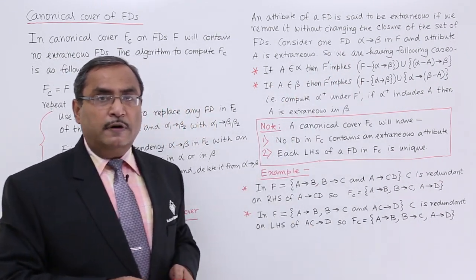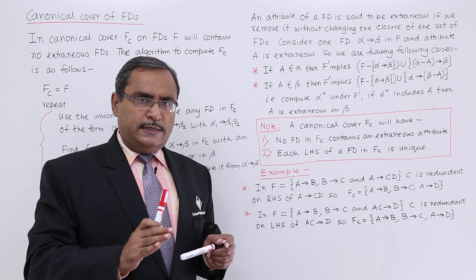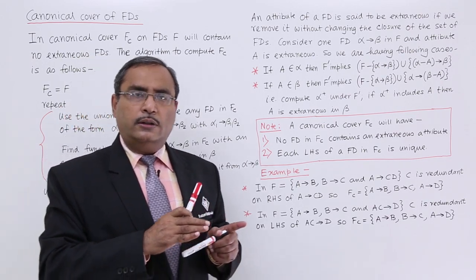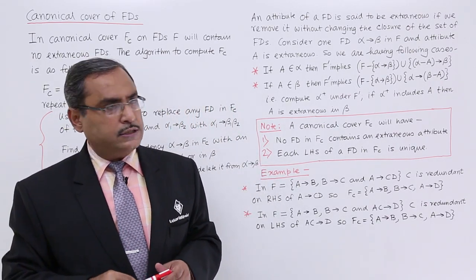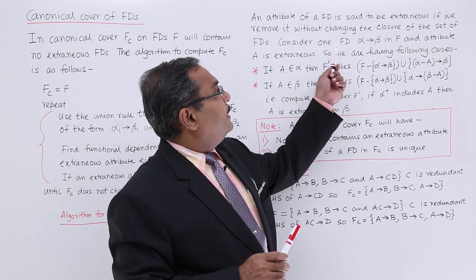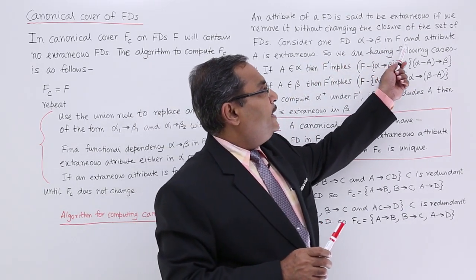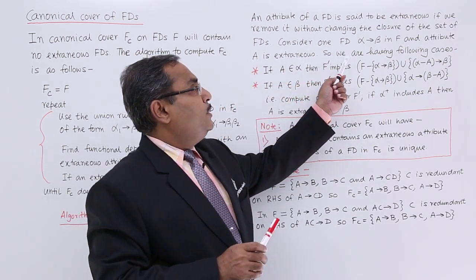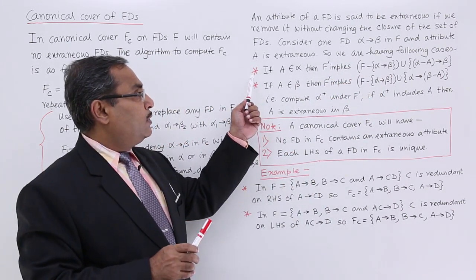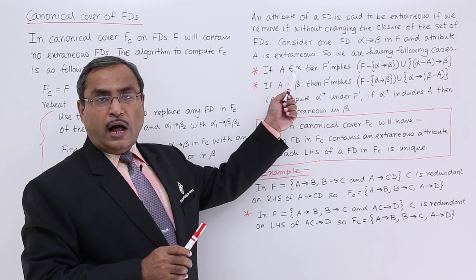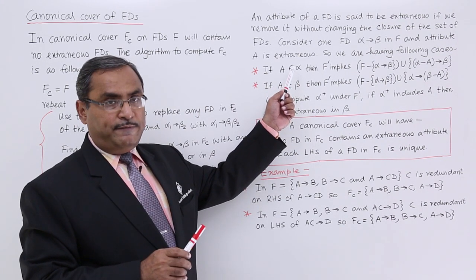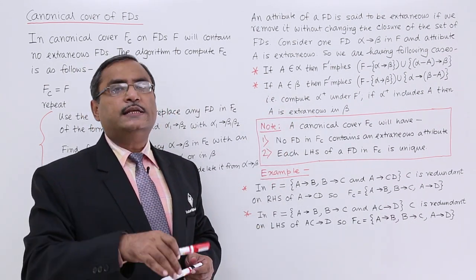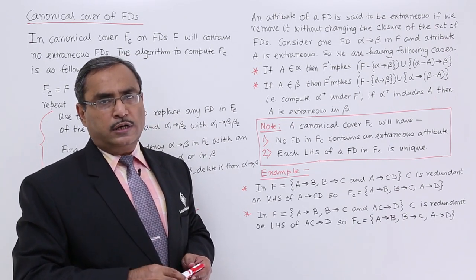Consider one functional dependency alpha → beta. We study explicitly whether the extraneous attribute a occurs on the left-hand side or on the right-hand side. Consider an FD alpha → beta in F and an attribute a that is extraneous or redundant. Case 1: if a belongs to alpha, meaning a occurs on the left-hand side. Case 2: if a belongs to beta, meaning the extraneous attribute a belongs to the right-hand side.